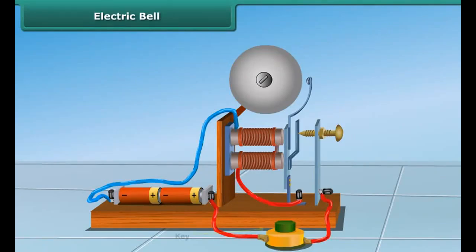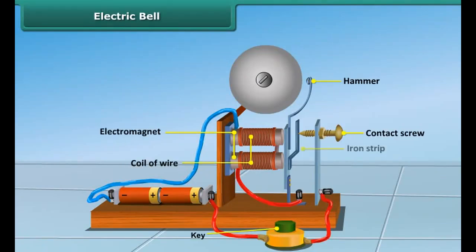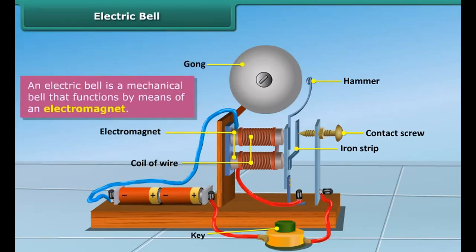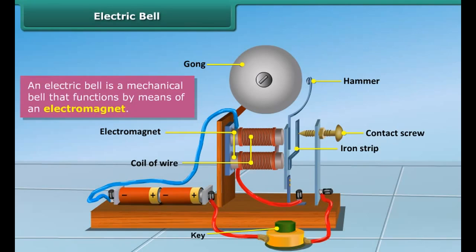Let us now look at the working of an electric bell. It functions by means of an electromagnet. The electric bell consists of a coil of wire wound on an iron piece — the coil acts as an electromagnet. An iron strip with a hammer at one end is kept close to the electromagnet, and there is a contact screw near the iron strip.